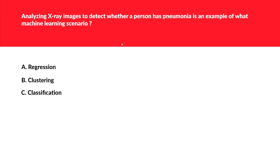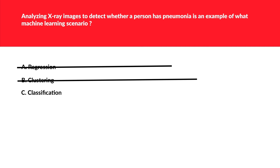Analyzing X-ray images to detect whether a person has pneumonia is an example of what machine learning scenario? This is not regression because you are not predicting a number. The question is essentially asking yes or no — does the person have pneumonia or not? Whenever a yes-or-no outcome is involved, classification should click in your mind. Clustering is wrong because it groups data points by similarity without labels. So classification is the correct option.